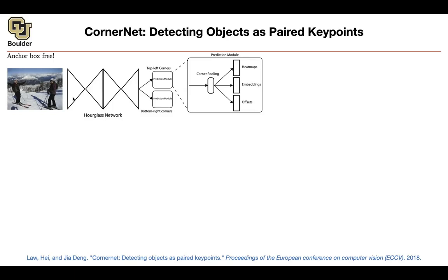I'm going to unravel this figure about the hourglass network. Where did we see hourglass networks before? We saw them for semantic segmentation, for per-pixel prediction — and more precisely, for pose estimation, which is a per-pixel prediction task.